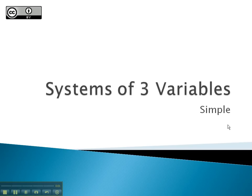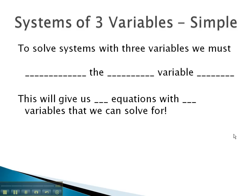In this video, we're going to look at solving systems of equations which have three variables. To solve a system with three variables, we must eliminate the same variable twice. If we can eliminate the same variable twice, it will give us two equations with two variables, which we know how to solve for by either using the addition or substitution method.